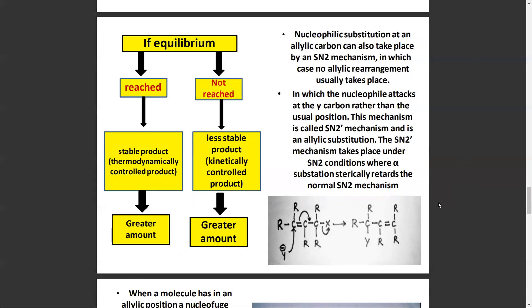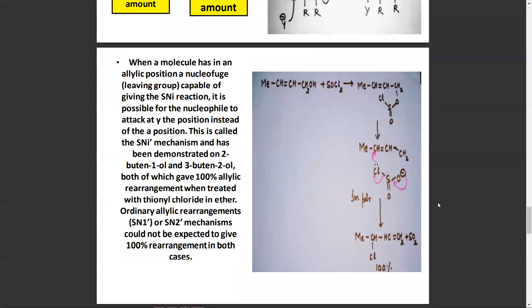When a molecule has in an allylic position a nucleophilic substitution leaving group capable of giving an SN1 reaction, it is possible for the nucleophile to attack at the gamma position instead of the alpha position. This is called the SN1 prime mechanism and has been demonstrated on 2-butene and 3-butene, both of which gave 100% of allylic rearrangement when treated with chlorine in ether. Ordinary allylic rearrangement via SN1 and SN2 mechanisms could not be expected to give 100% rearrangement in both cases.